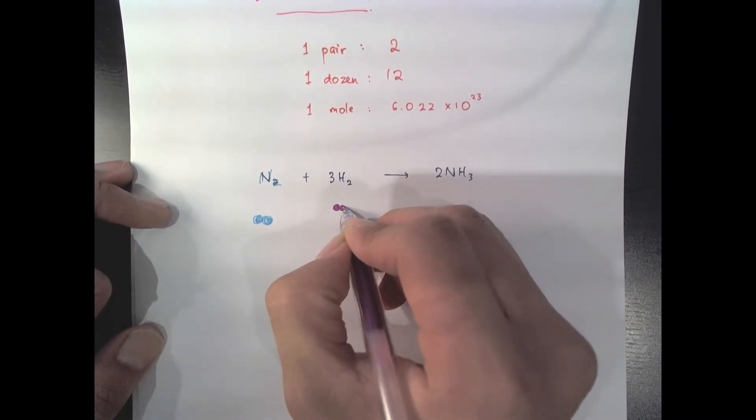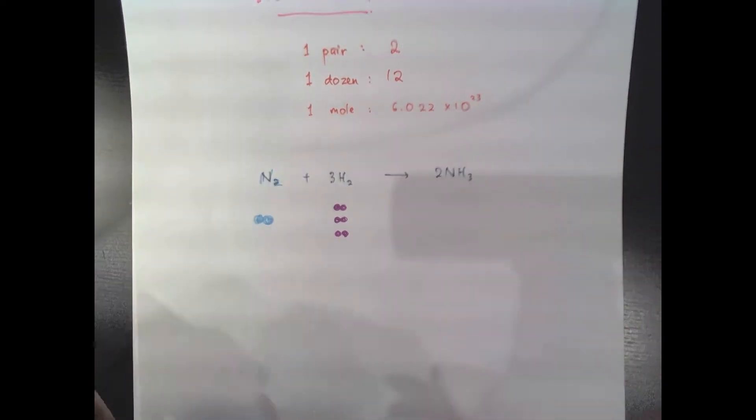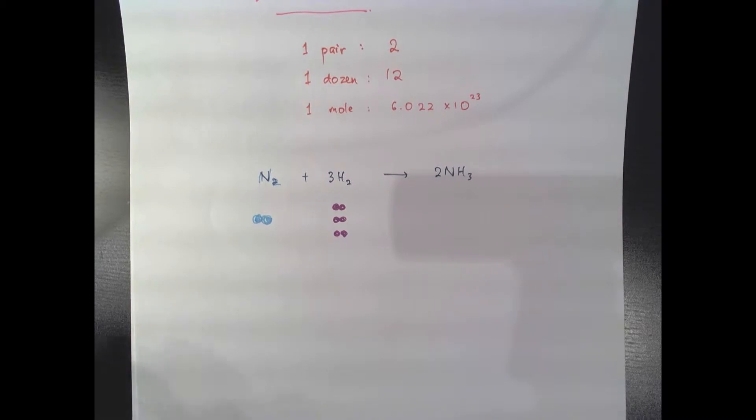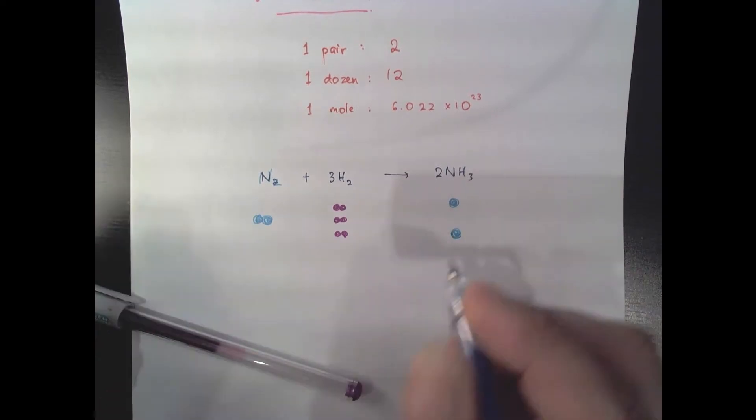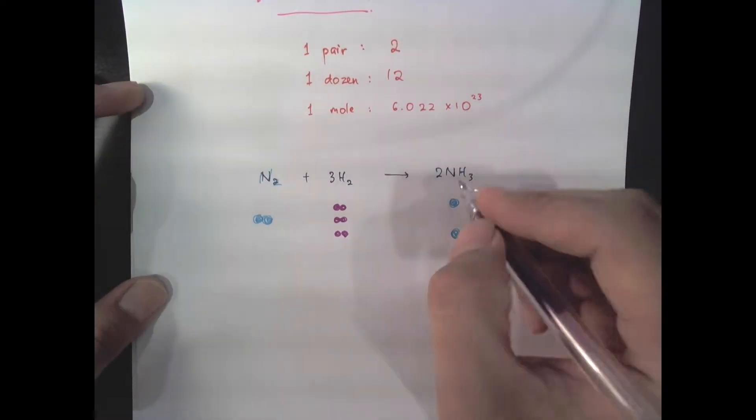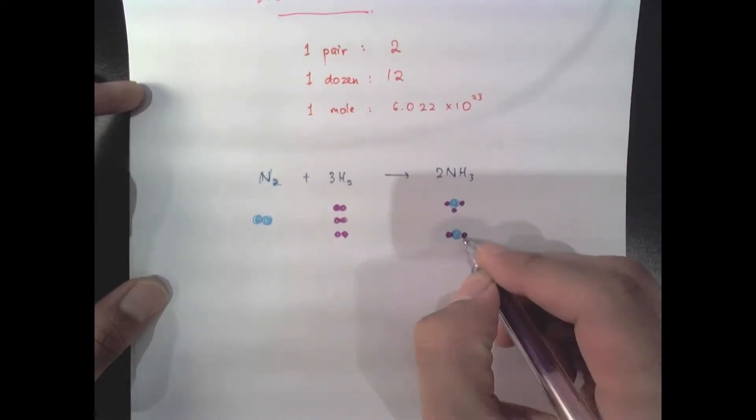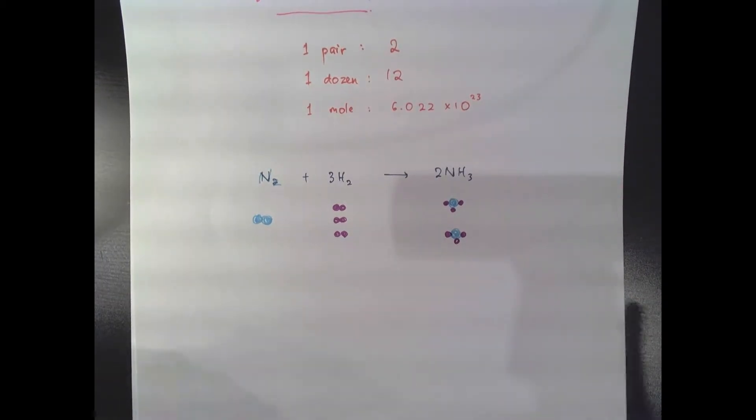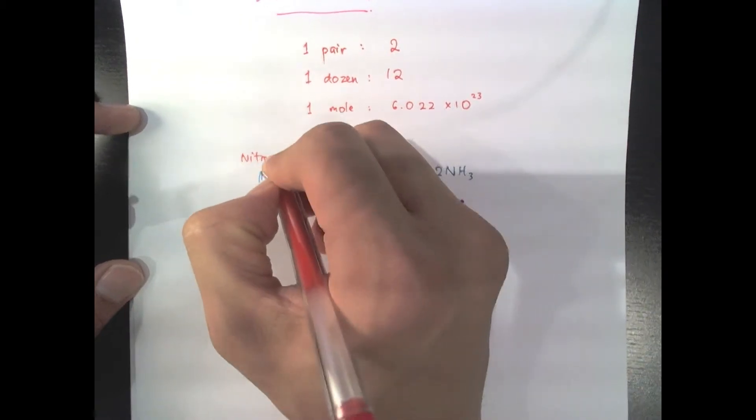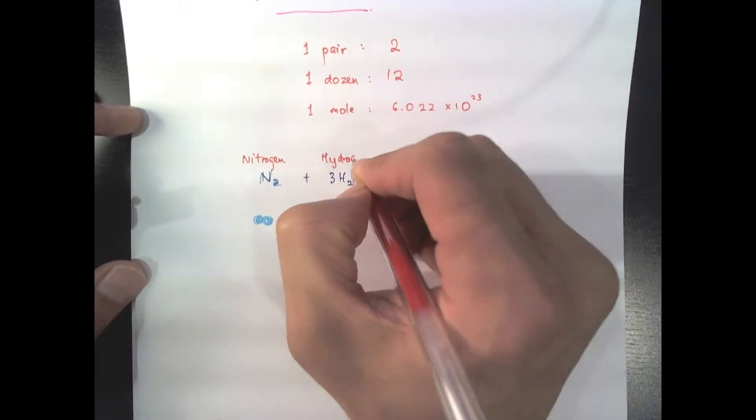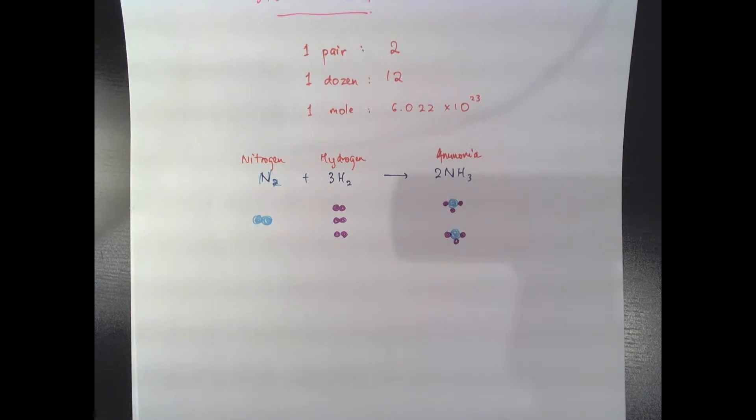And then this says I'm going to have three molecules of hydrogen, and all of that reacted together is going to give me two molecules of ammonia. Ammonia is one nitrogen with three hydrogens attached onto it. So let me just name these. That's my nitrogen, that's hydrogen, and that is ammonia.